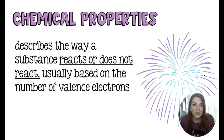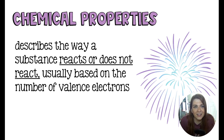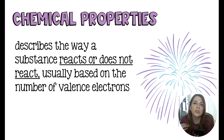Then we can move on to chemical properties, which is way more fun in my opinion. Chemical properties describe the way that a substance reacts or does not react, and that's going to be based on the number of valence electrons. For you and me, chemical properties are kind of like our personality — I am very sarcastic, I am also very honest almost to a fault, and I love to have a good time. Those would describe my personality, and that's kind of like my chemical properties — it describes the way that you react in certain situations.